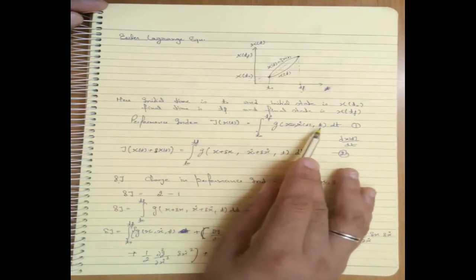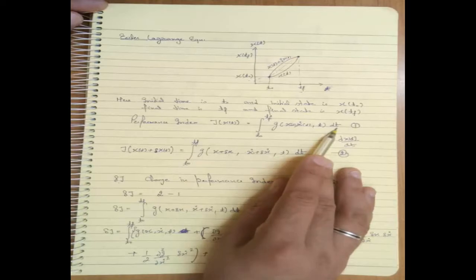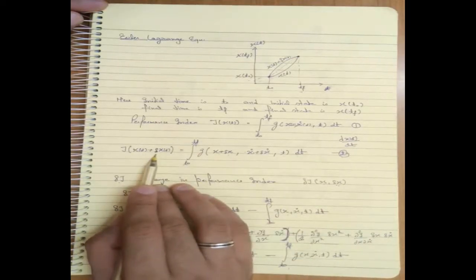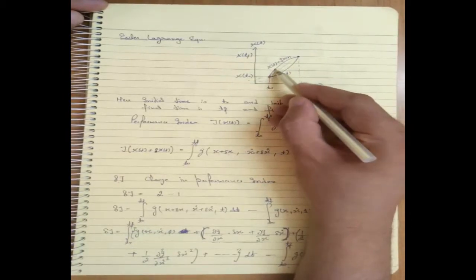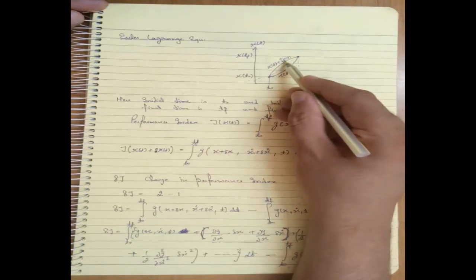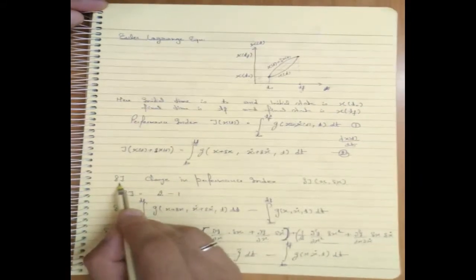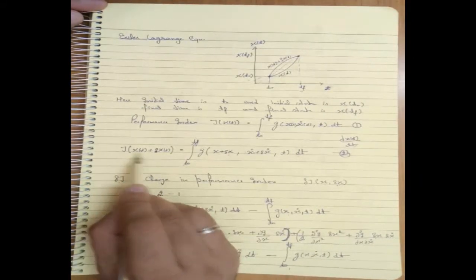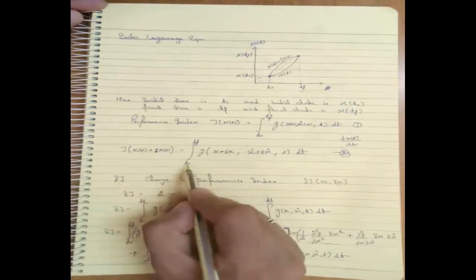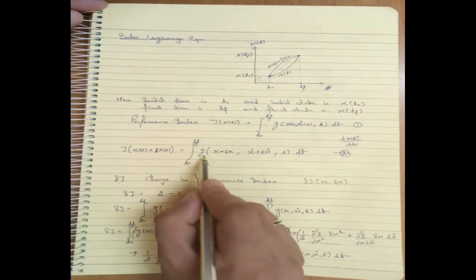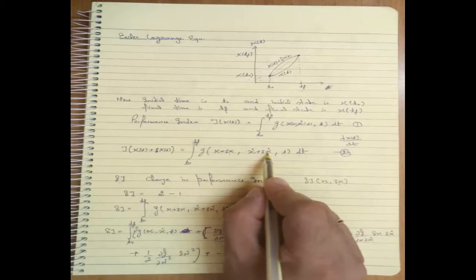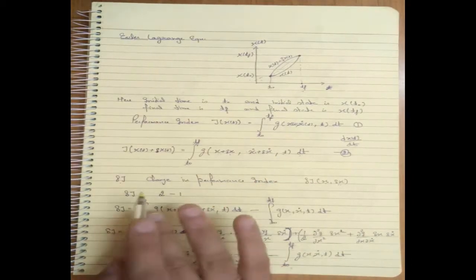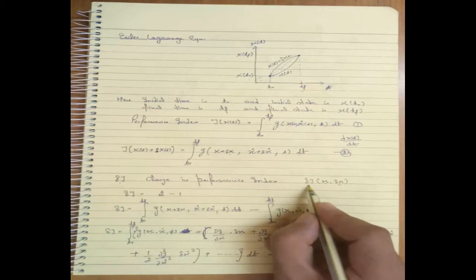When there is a change in state, the original state X(T) becomes X(T) + δX(T), where δX may be positive or negative. The change in performance index with the change in state is given by the integral from T0 to Tf of G(X + δX, X-dot + δX-dot, T) dT. This change in performance index is denoted by δJ, which is a function of X and δX.